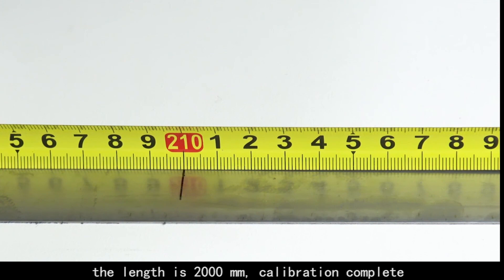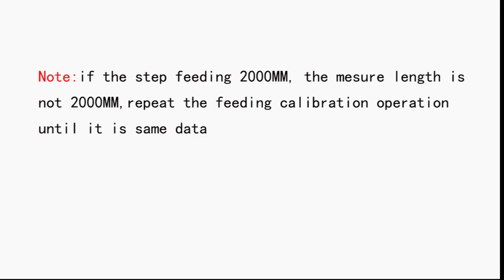Calibration complete. Note: if the step feeding is 2000 millimeters, the measured length is not 2000 millimeters, repeat the feeding calibration operation until it is the same data.